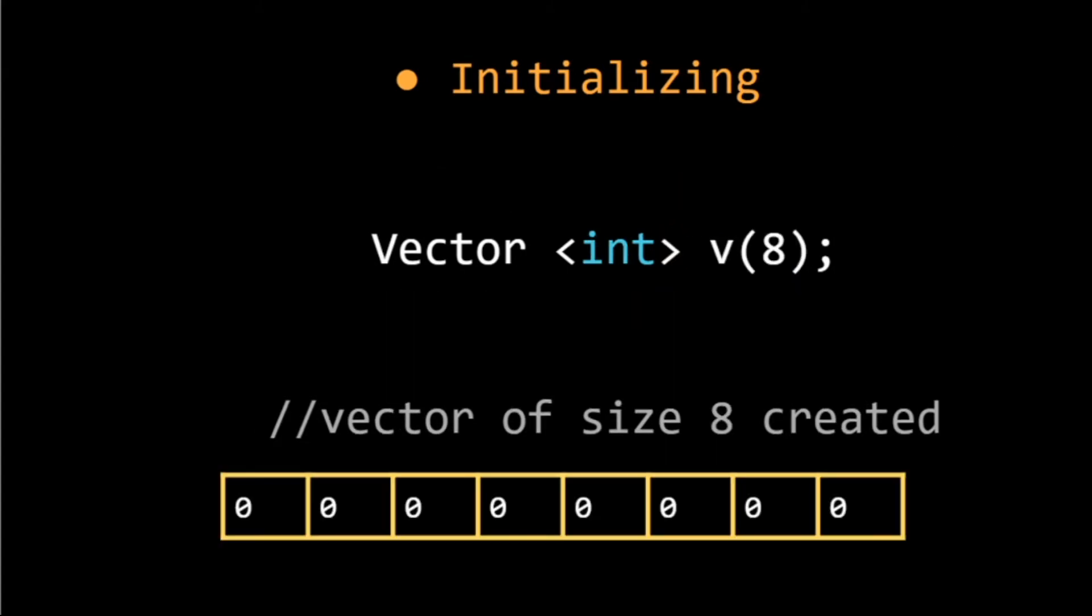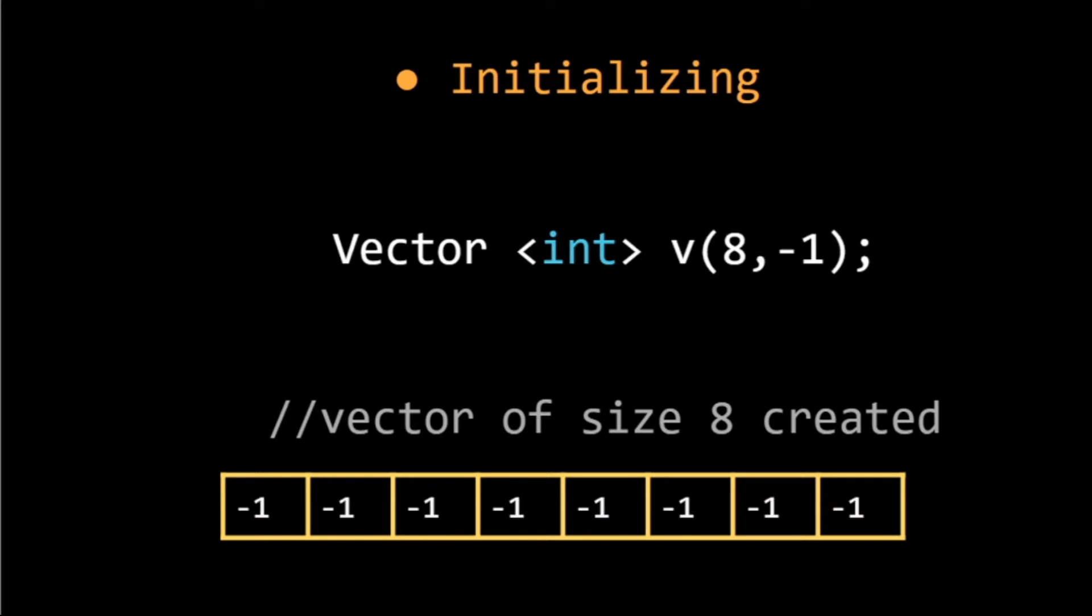Now if we want to define the size of the vector, we can just give it in the parenthesis. Here we have initialized the vector of size 8. In a vector, all the elements get initialized with the value 0 by default. We can also change these values by giving it in the input. For example, here I have changed the default value by minus 1. So now my vector is of the size 8 and all the values are initialized by minus 1.